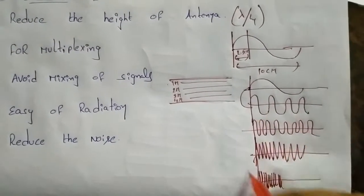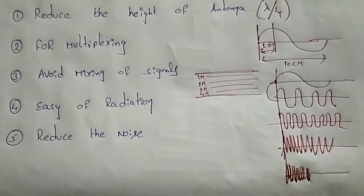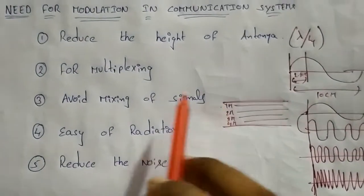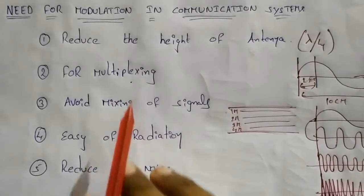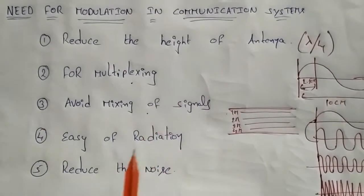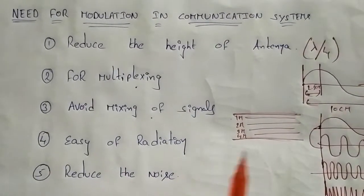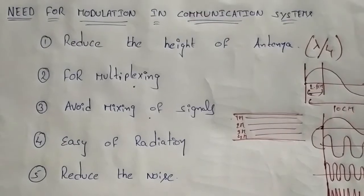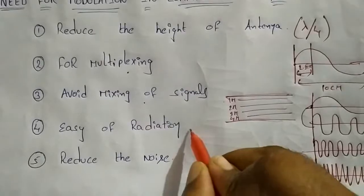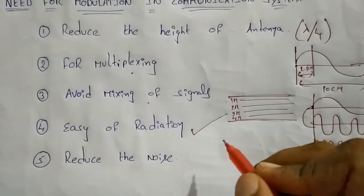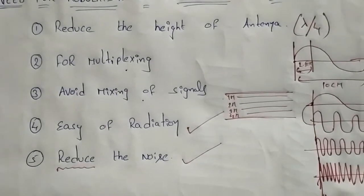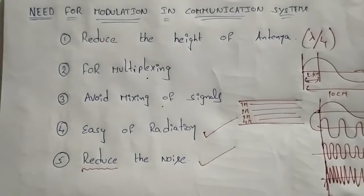So if you want to avoid mixing of signals, you can transmit multiple signals at the same time but using different carrier frequencies for each. This also helps to reduce noise by separating the carriers.